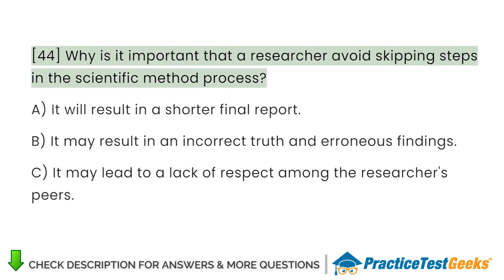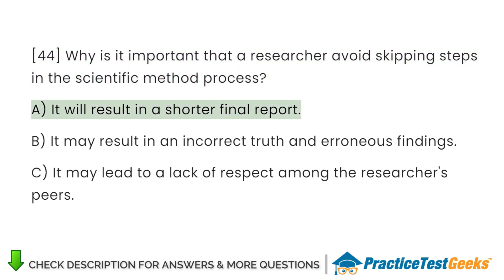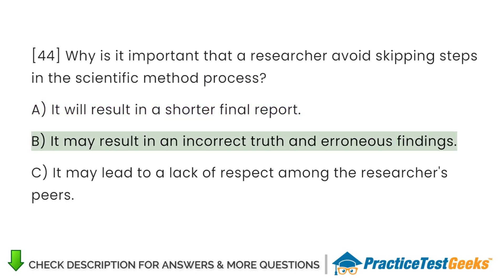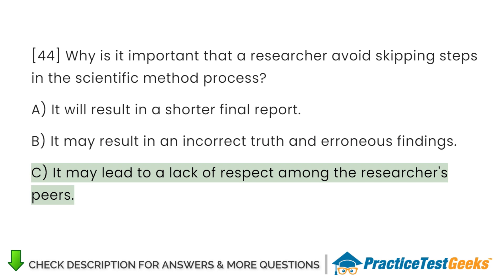Why is it important that a researcher avoid skipping steps in the scientific method process? A. It will result in a shorter final report B. It may result in an incorrect truth and erroneous findings C. It may lead to a lack of respect among the researcher's peers